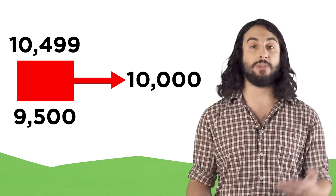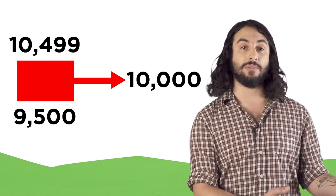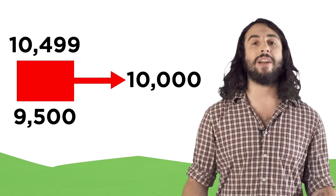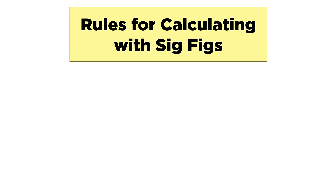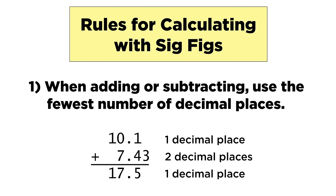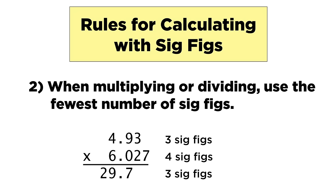So anything from 9,500 to 10,499 would round to our estimate of 10,000. When we do calculations, we have to pay attention to the number of sig figs. If we are adding or subtracting, our answer will have as many decimal places as the value with the least number of decimal places. If we are multiplying or dividing, our answer will have as many sig figs as the value with the least number of sig figs.